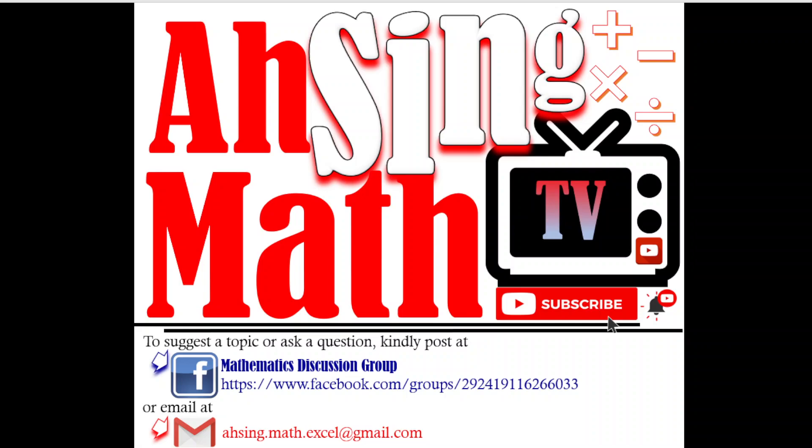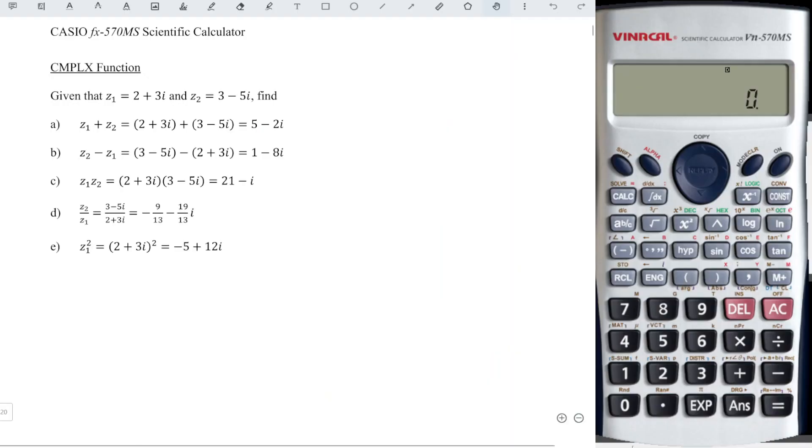Hi, this is Asin. You are now watching Asin Mat TV. In this video we will learn how to perform mathematical operations for complex numbers by using a Casio calculator. Since we have the same set of complex numbers for different operations, we are going to first store the values in particular letters.